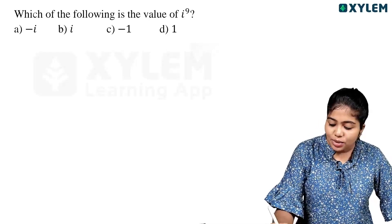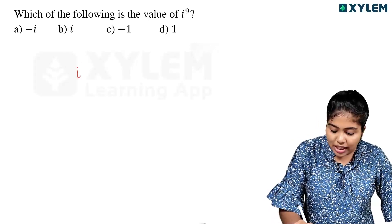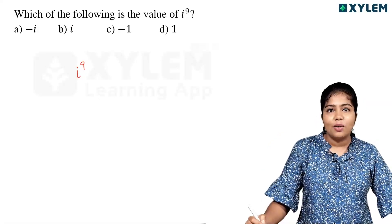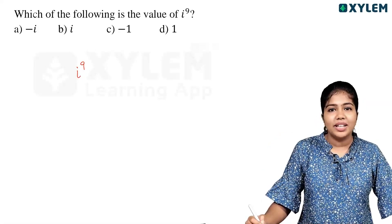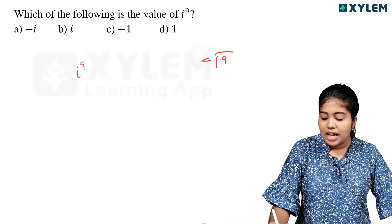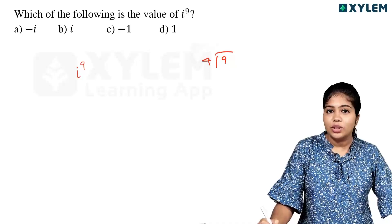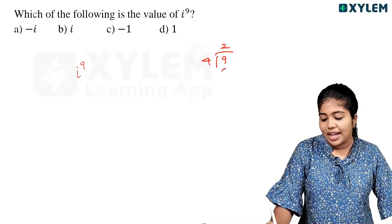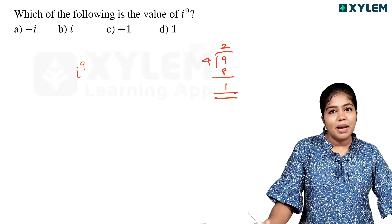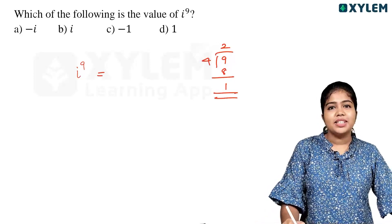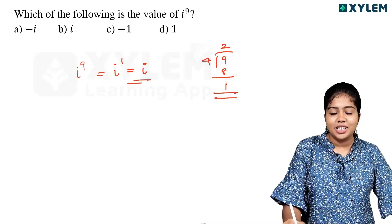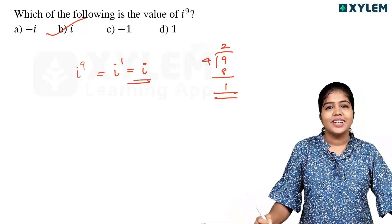Now, we have a problem with i raised to any power. We will divide the power of i raised to 9 by 4. If i raised to 9 divided by 4 gives remainder, we get i raised to 1 is equal to i raised to 9. So i is the right answer.